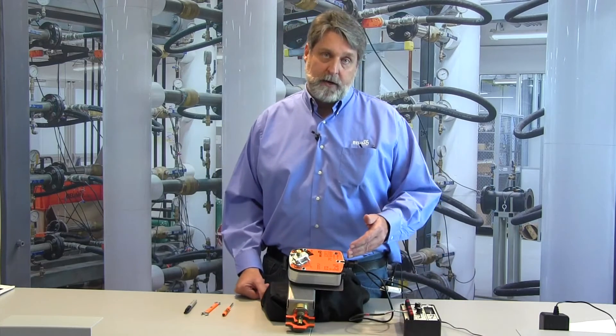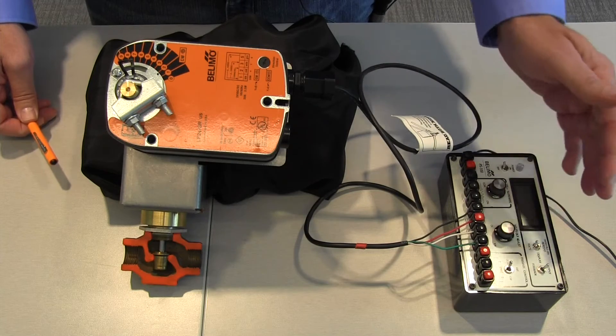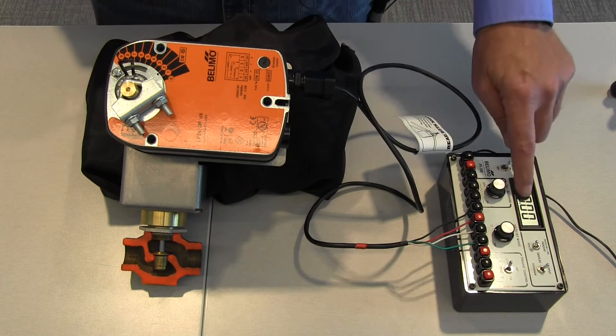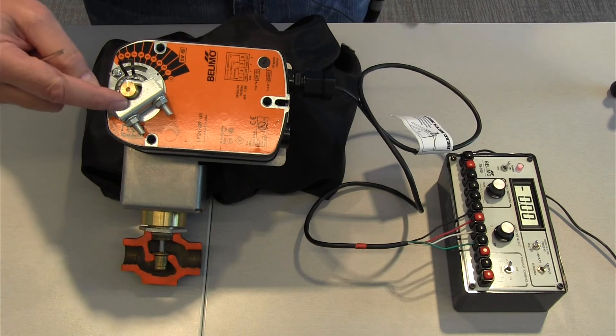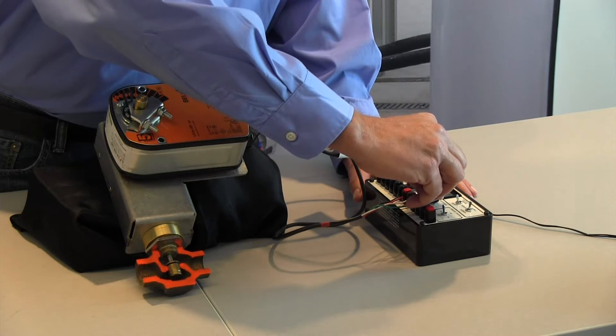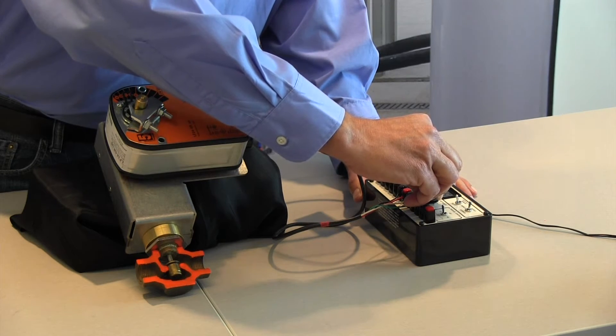I've got the actuator hooked up to the Belimo PS100 power supply. I'm going to turn on the power. I've got it on zero voltage. The actuator doesn't move. I'm going to apply 3.15 volts. The actuator is going to begin to open.